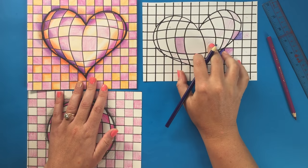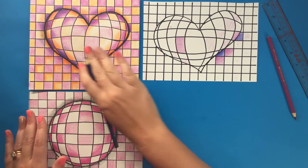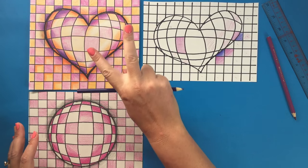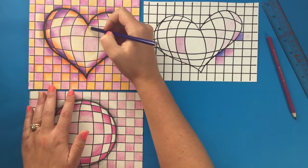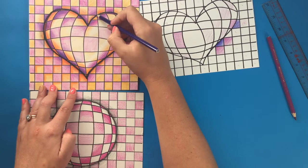Our goal, boys and girls, is to achieve the illusion that our heart is 3D with two ways. The first one is through using our curved versus straight lines.